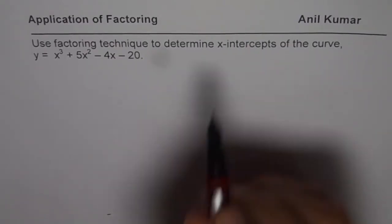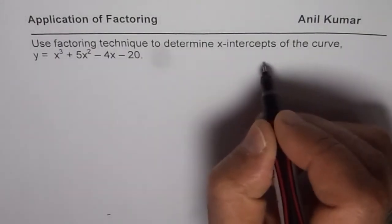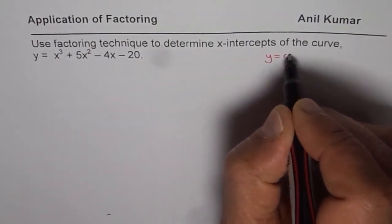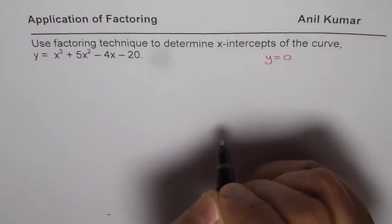What is x-intercept? At x-intercept, y is equal to 0. So, y = 0 at x-intercept.